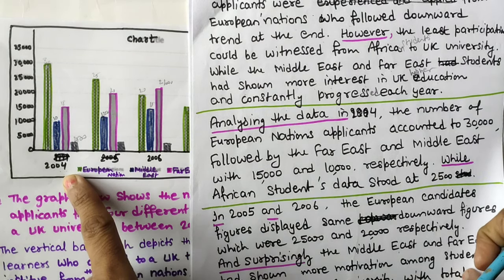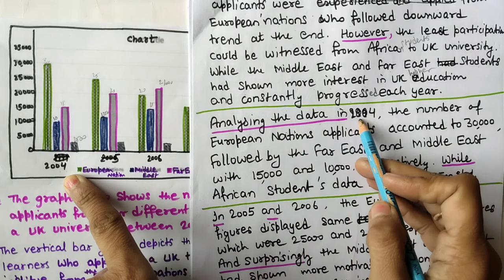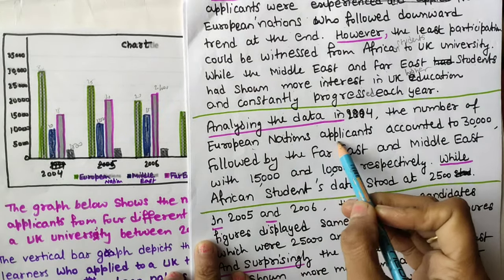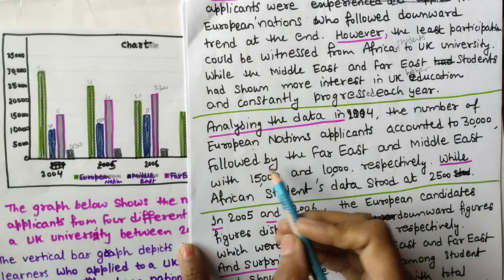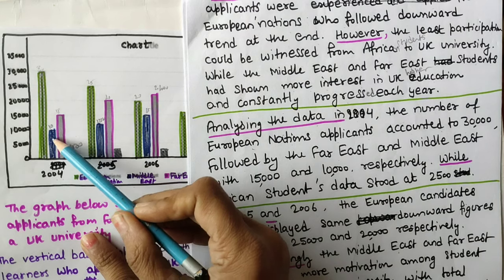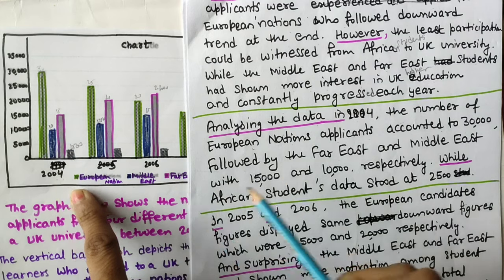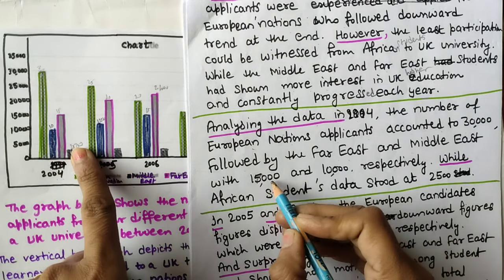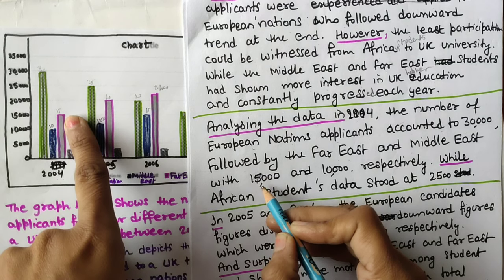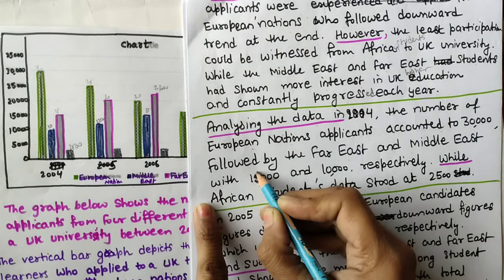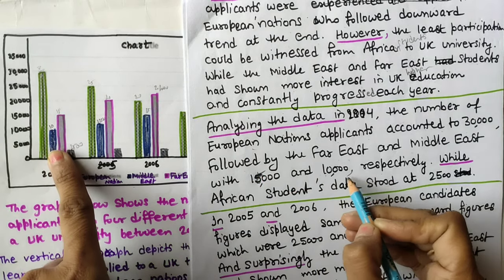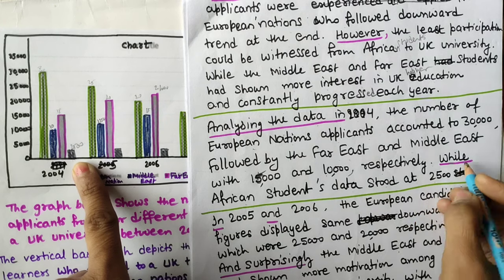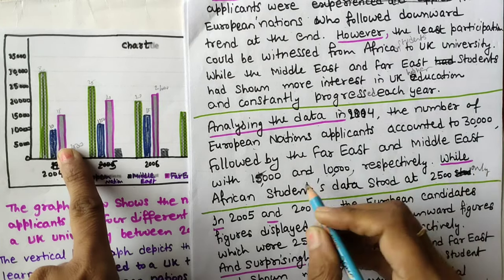Analyzing the data in 2004: the highest was European nations - 'The number of European nations applicants accounted to 30,000.' Followed by Far East with approximately 15,000, Middle East with 10,000 - 'respectively' - while African students' data stood at 2,500 only. You can also note that European nations had the maximum number of applicants out of all categories in the first year.